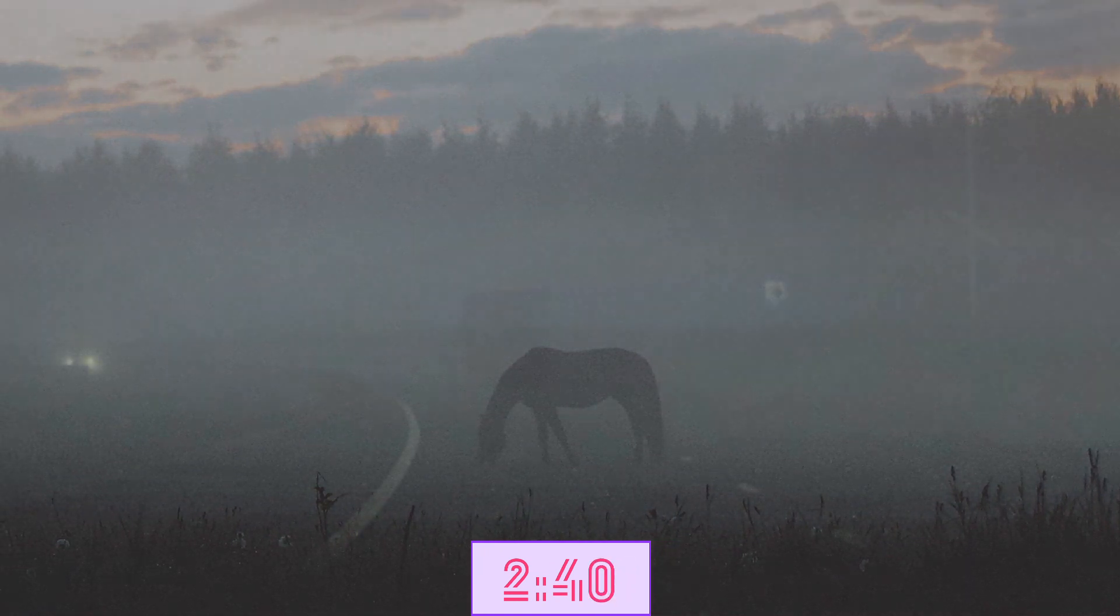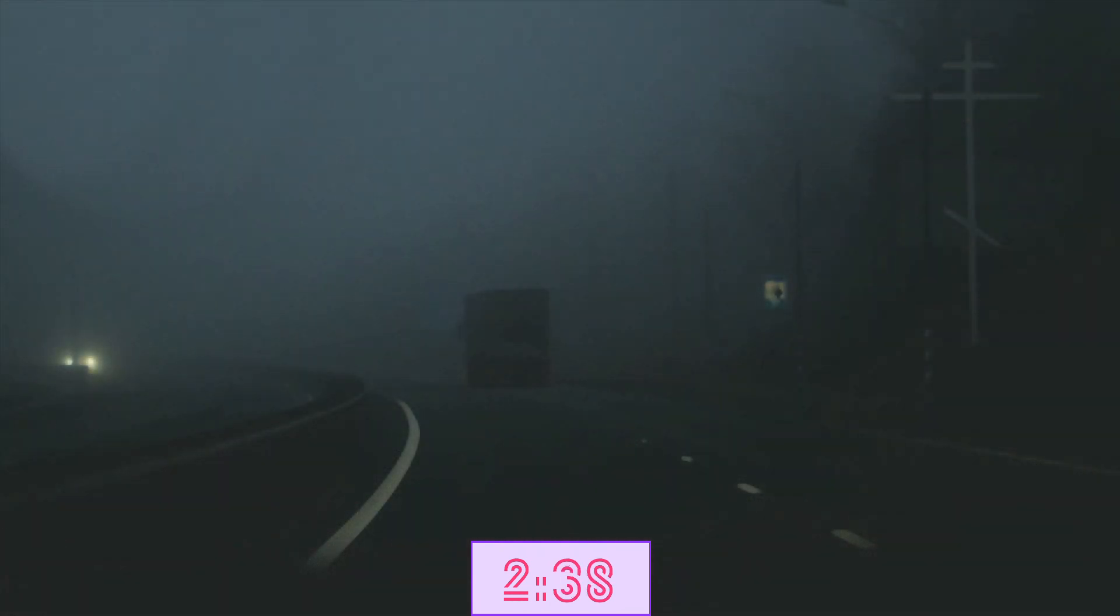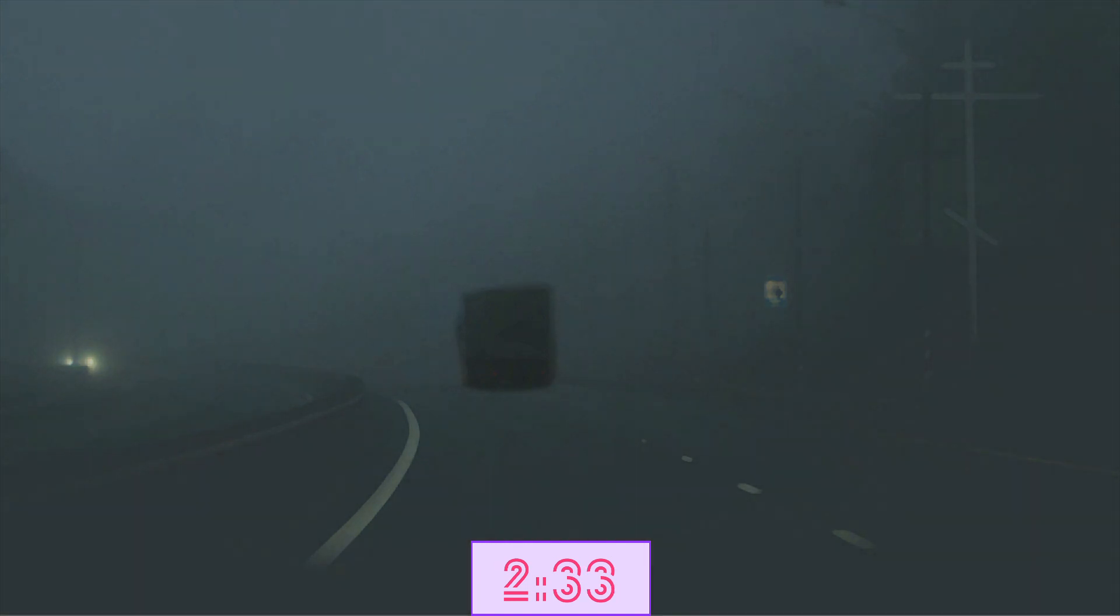For example, take this image of a dark and misty road. You are able to recognize the truck without problem. However, when removing the background, that truck is nothing more than a blurry box.